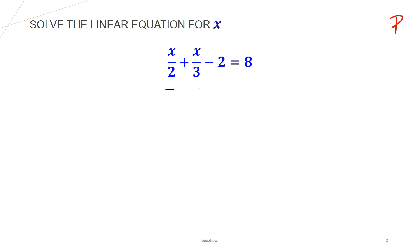So there are actually two ways to solve this linear equation. Let us see the first approach here, approach 1. So here we will solve these fractions first: x upon 2 plus x upon 3. Let us write it down.